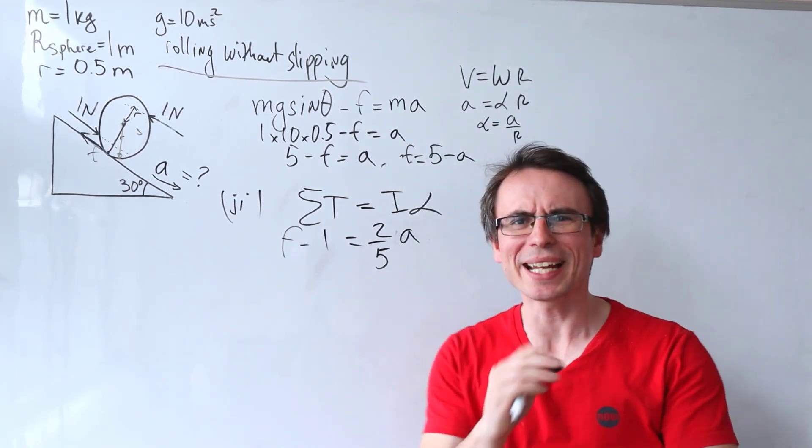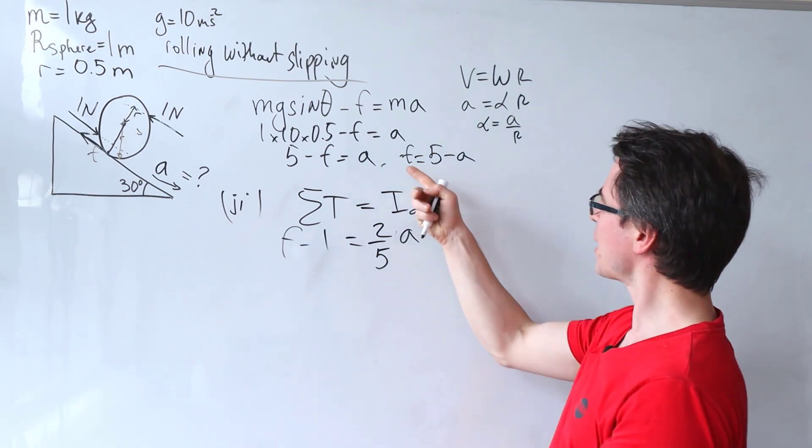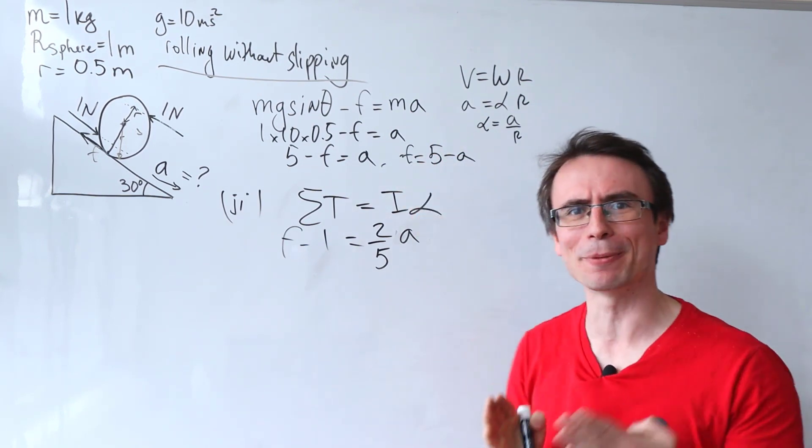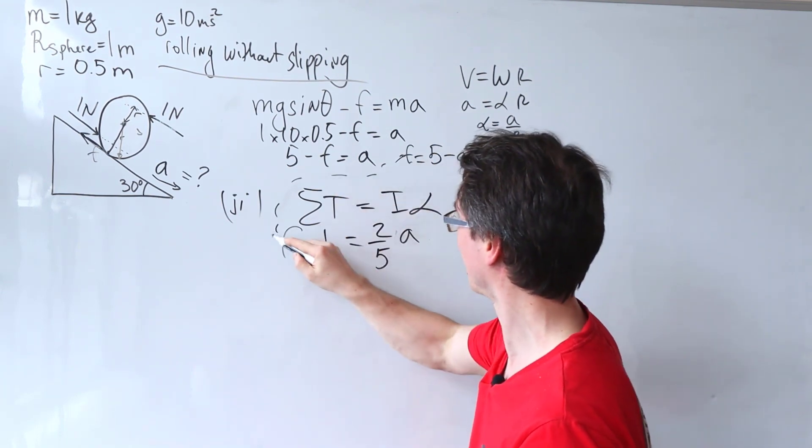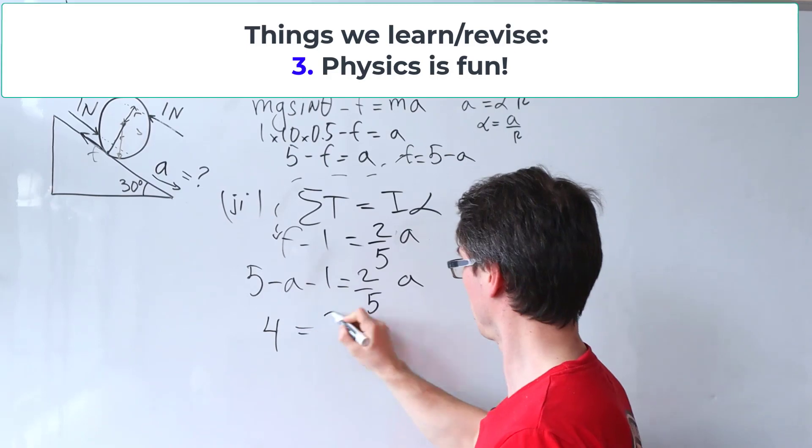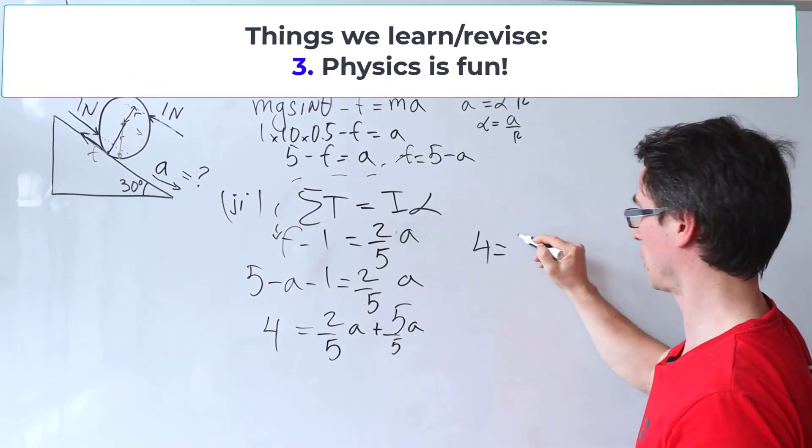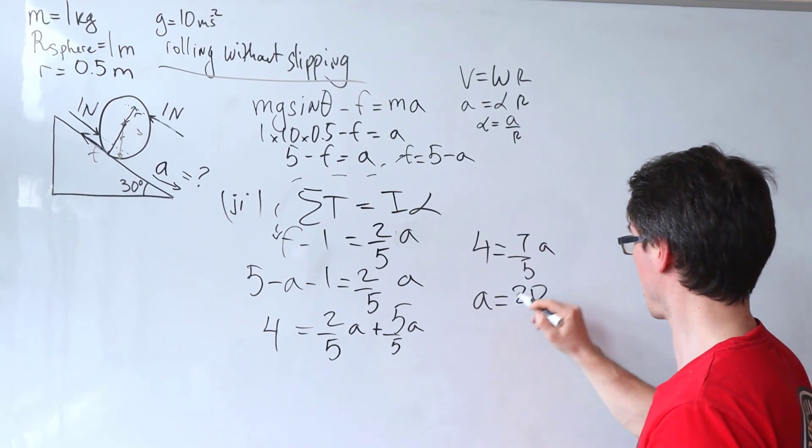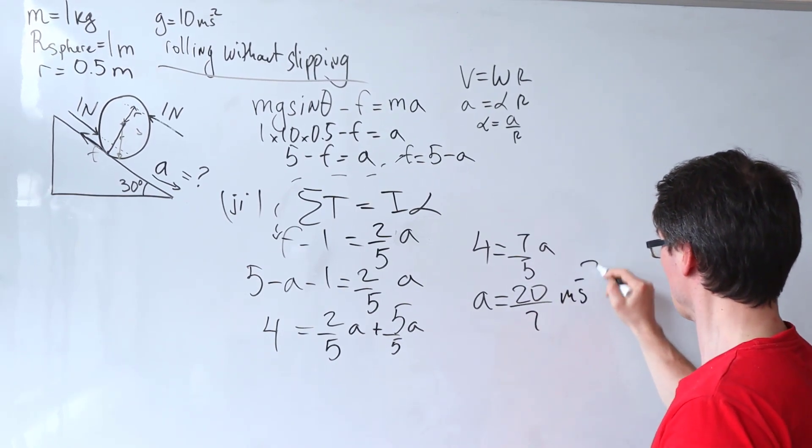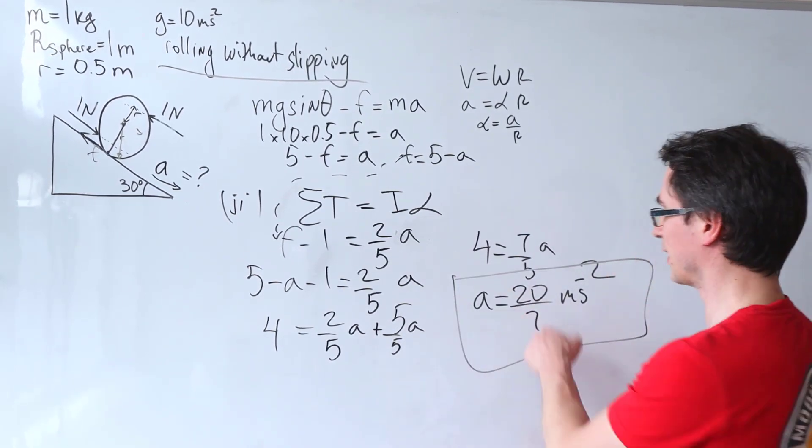But hang on a minute, if only we had an equation for F in terms of A. Oh, wait, of course we do. Let's plug this back into here. Therefore, A will be 20 over 7 meters per second squared.